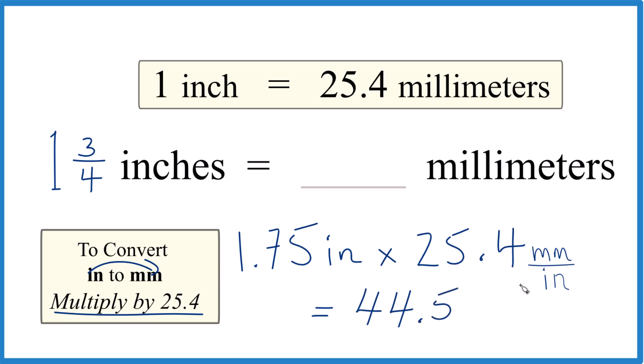And the units, inches on top and the bottom cancel out. We're left with millimeters. So when we convert one and three-fourths inches, or 1.75 inches, to millimeters, we end up with 44.5 of those millimeters.